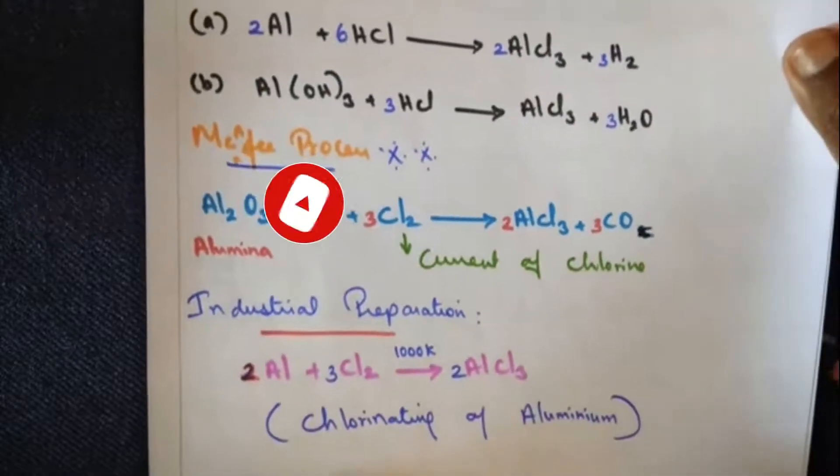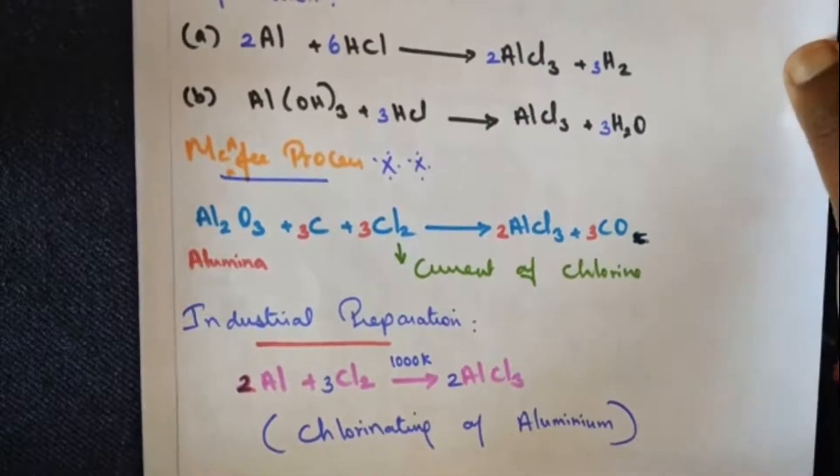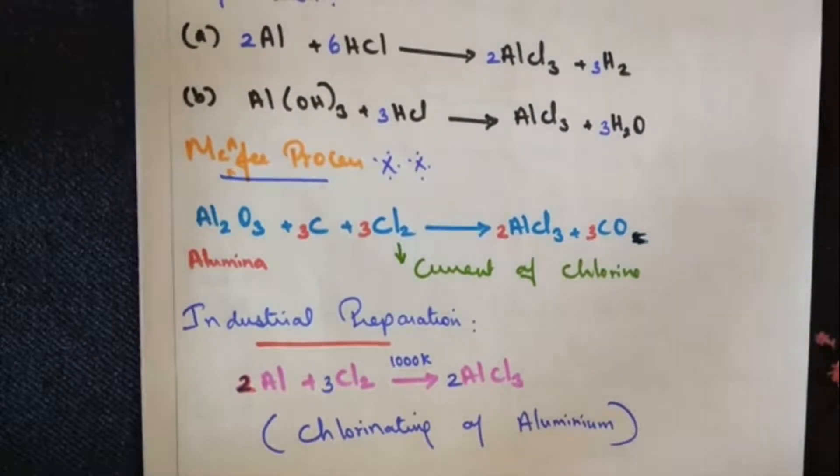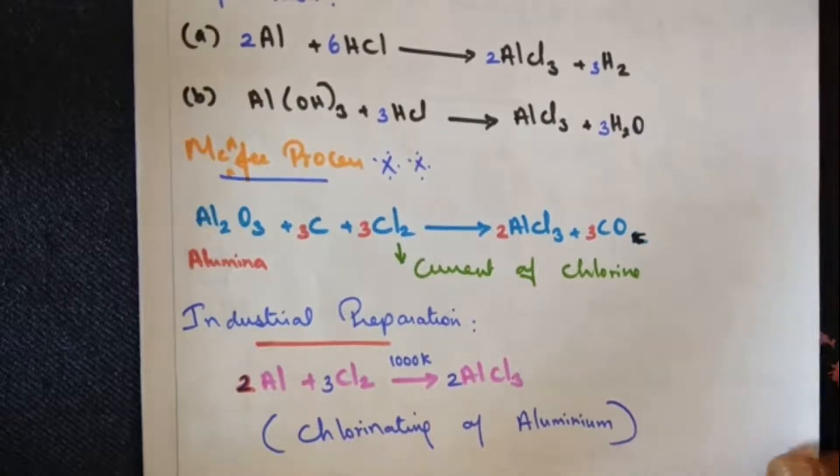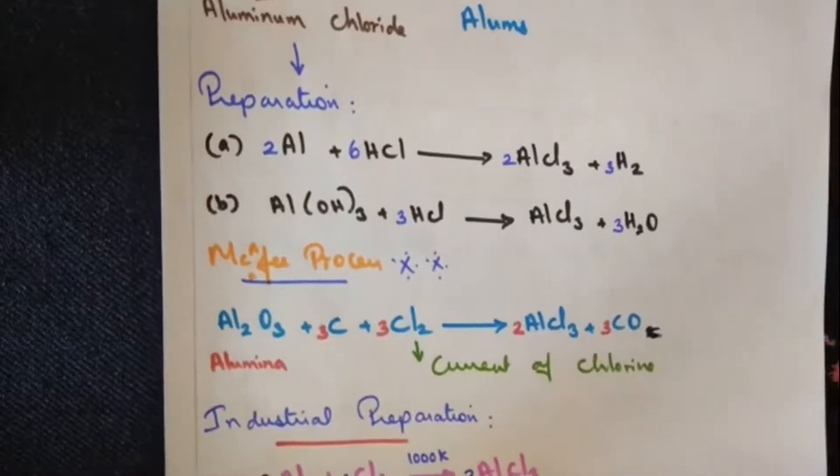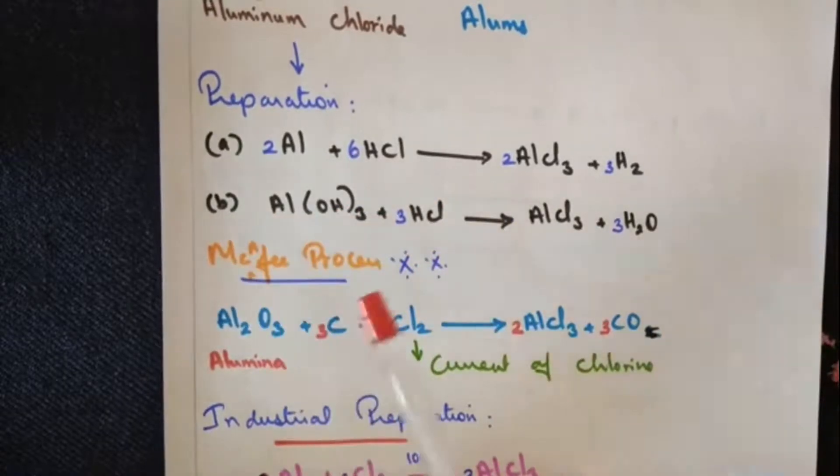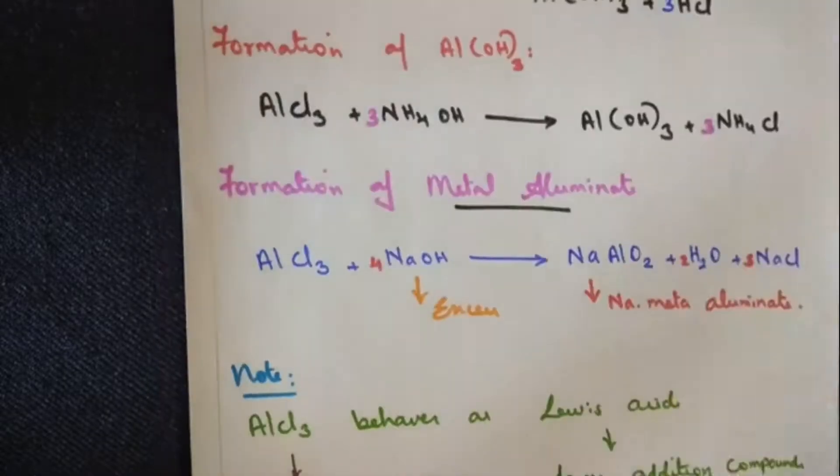For industrial preparation in large scale, aluminium is treated with chlorine. The temperature condition should be 1000 Kelvin: 2Al + 3Cl2 → 2AlCl3. This method is also called chlorinating of aluminium. With this we are finishing the preparation of aluminium chloride. Out of it, McPhee process is the most important one.